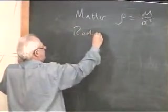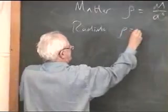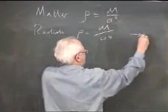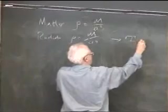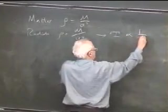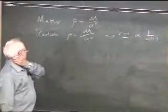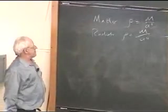For radiation, the density is a constant over A to the fourth, which implies that the temperature T scales as 1 over A. And we did both of those last time.